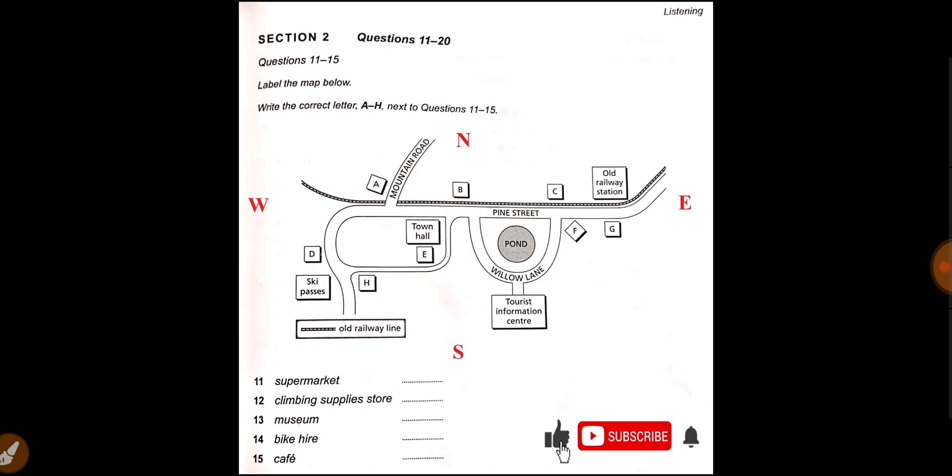So when you reach Pine Street from here, you'll see the old railway line on the other side of the road. Turn left into Pine Street and keep going until you come to Mountain Road. And just past here, the museum will be on your left, just behind the railway line.